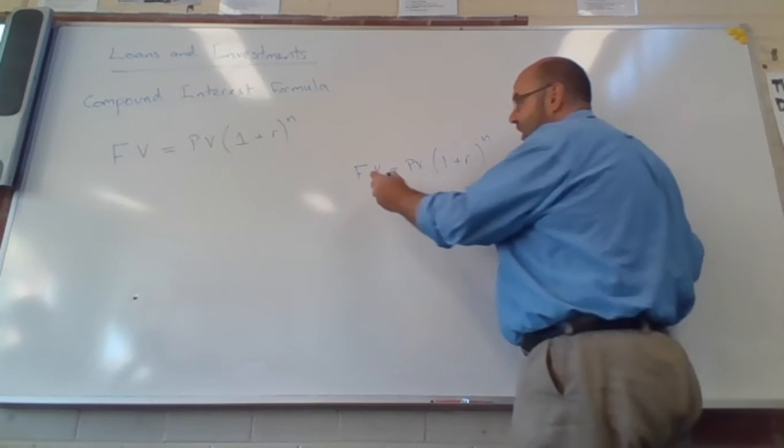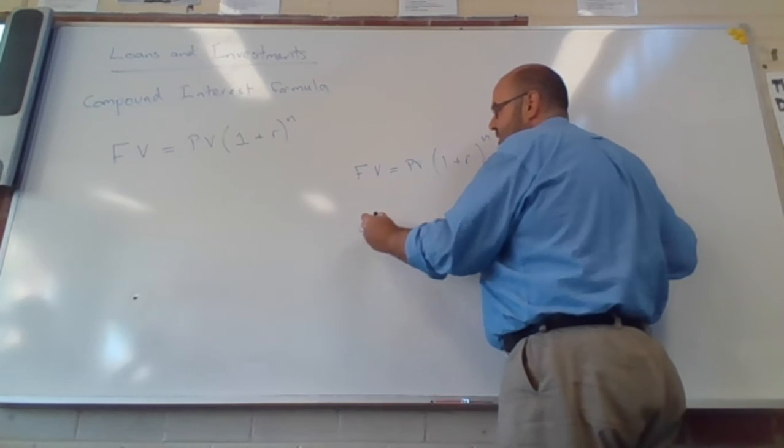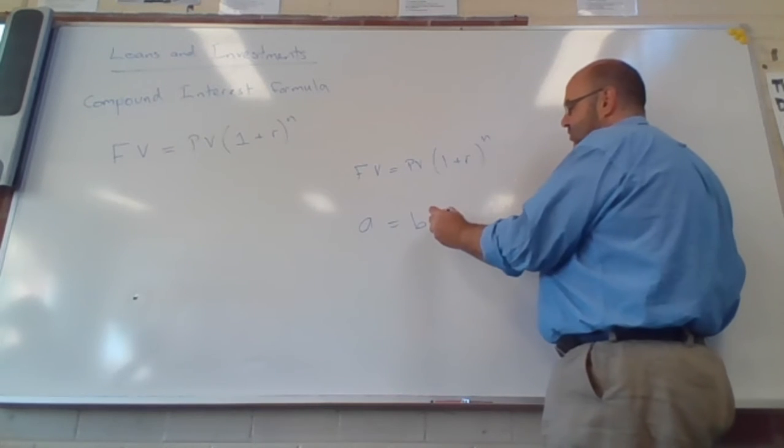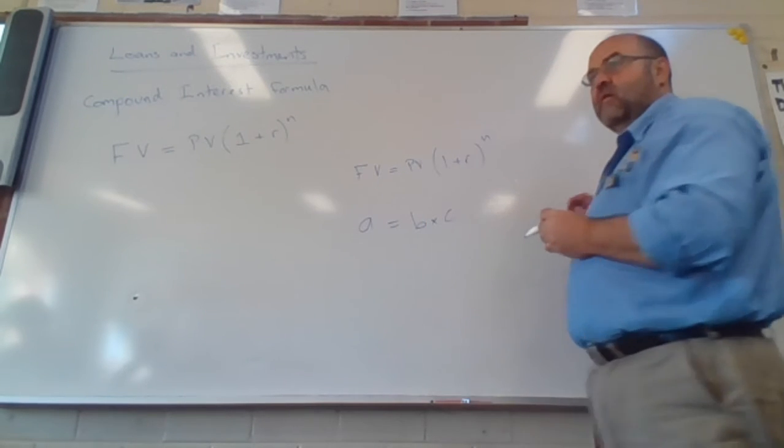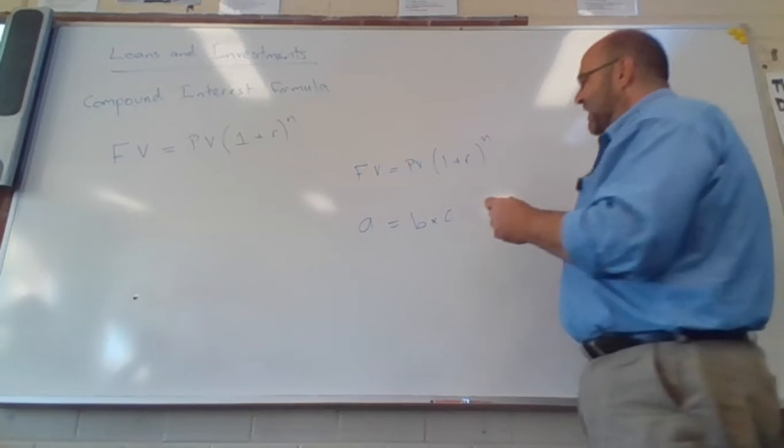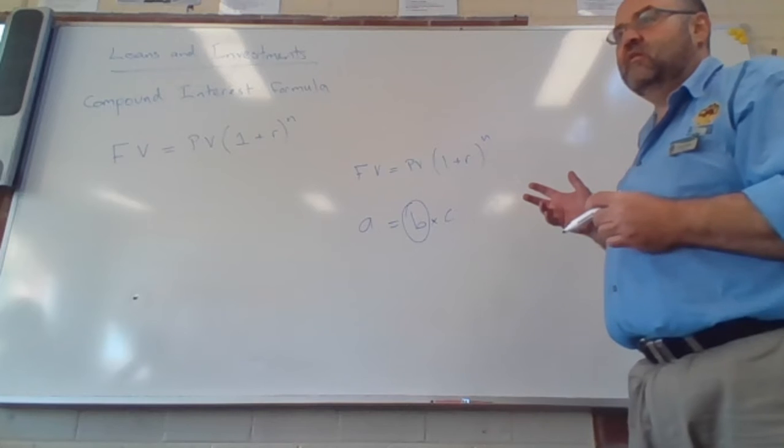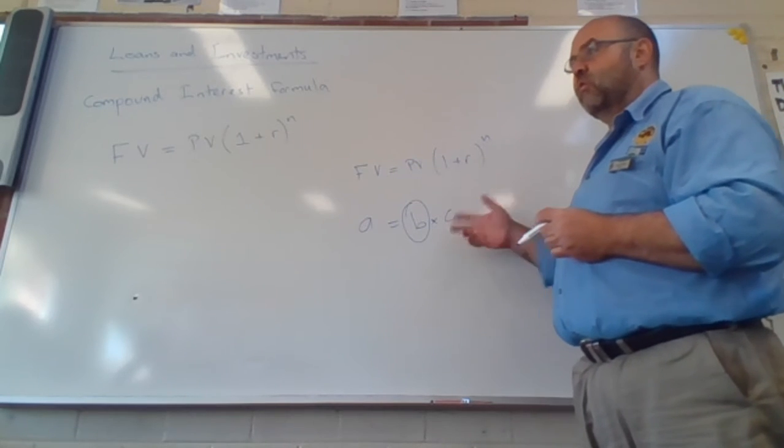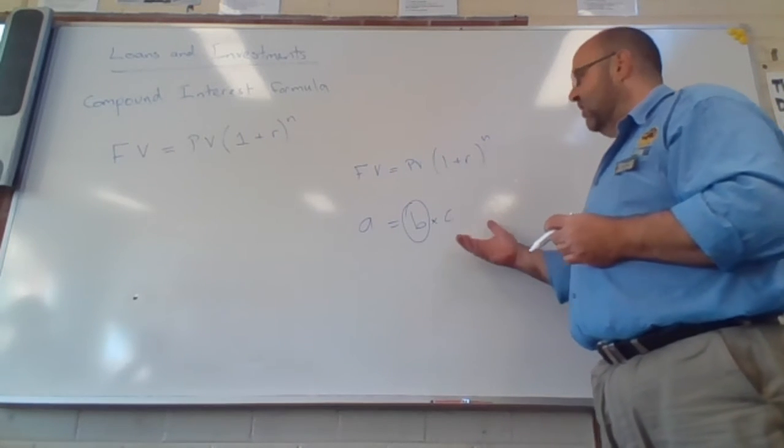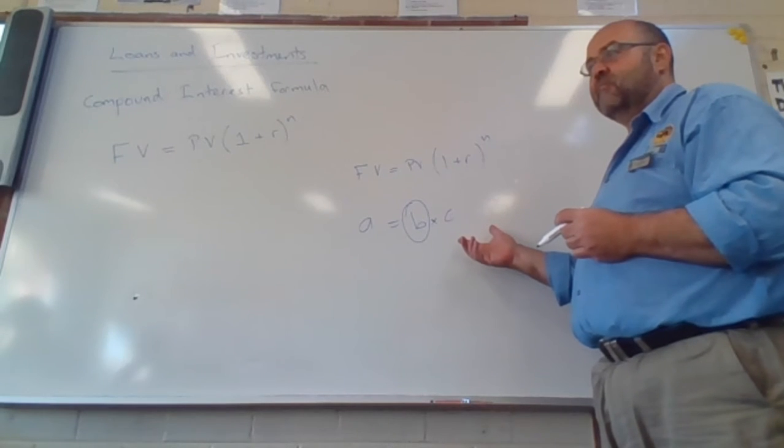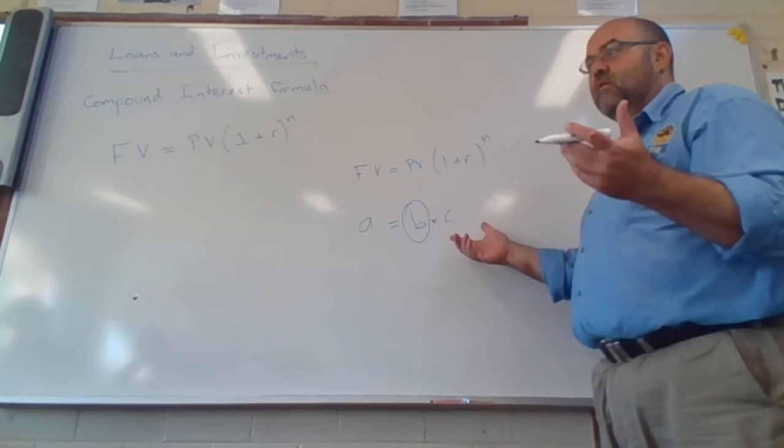All it says is, here is a term, here is a term, and here is a term. If I wanted to make B the subject of the formula, if I wanted the formula to say B equals, then I've got to get rid of the C. What's the C doing on the right-hand side?